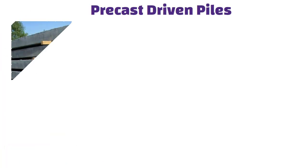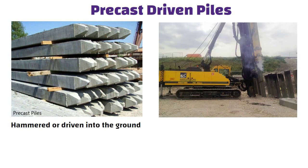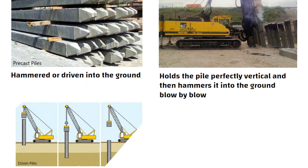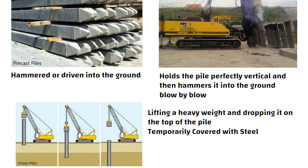Precast driven piles are first cast at ground level and then hammered or driven into the ground using a pile driver. This is a machine that holds the pile perfectly vertical and then hammers it into the ground blow by blow. Each blow is struck by lifting a heavy weight and dropping it on the top of the pile. The pile is temporarily covered with a steel cap to prevent it from disintegrating.